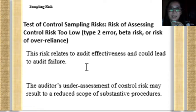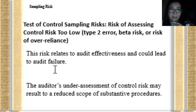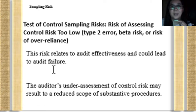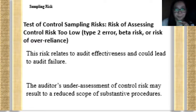This type of risk relates to audit effectiveness and could lead to audit failure. The auditor will not be effective because, since he relies on the internal control, he will do less substantive procedure and will not detect material misstatements that exist. Therefore, it leads to audit failure because the auditor relied on an internal control that is not operating effectively. The auditor's under-assessment of control risk may result in a reduced scope of audit procedures.